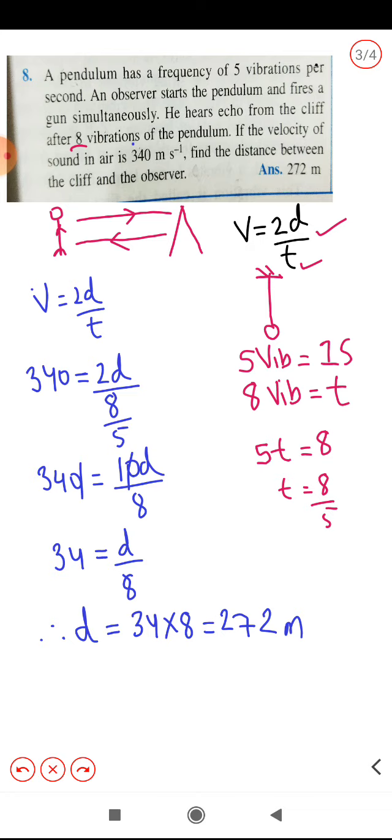So this is how we can solve such numericals. Basically this is the only part you need to understand. You need to calculate the time and then put it in this formula. Velocity value is given, we need to calculate the distance here. I hope you understood the calculation part. Do check, there is another board numerical. Let me solve it in the next video.